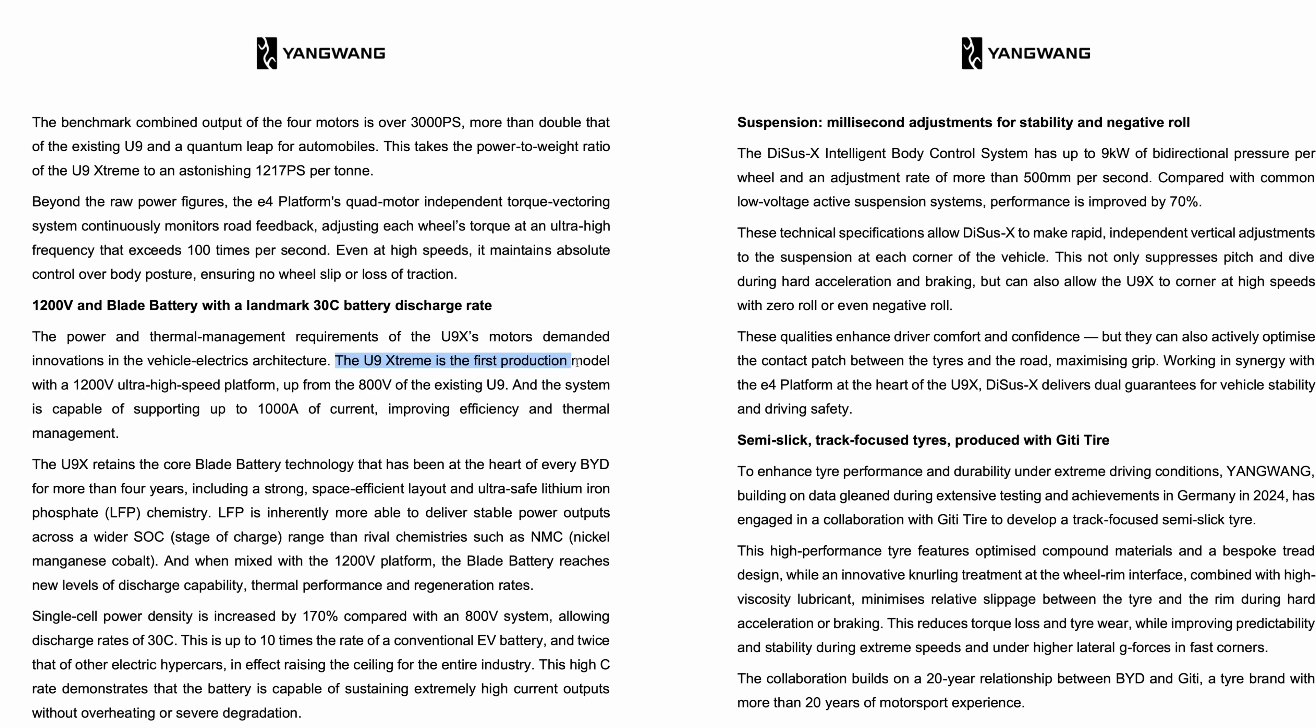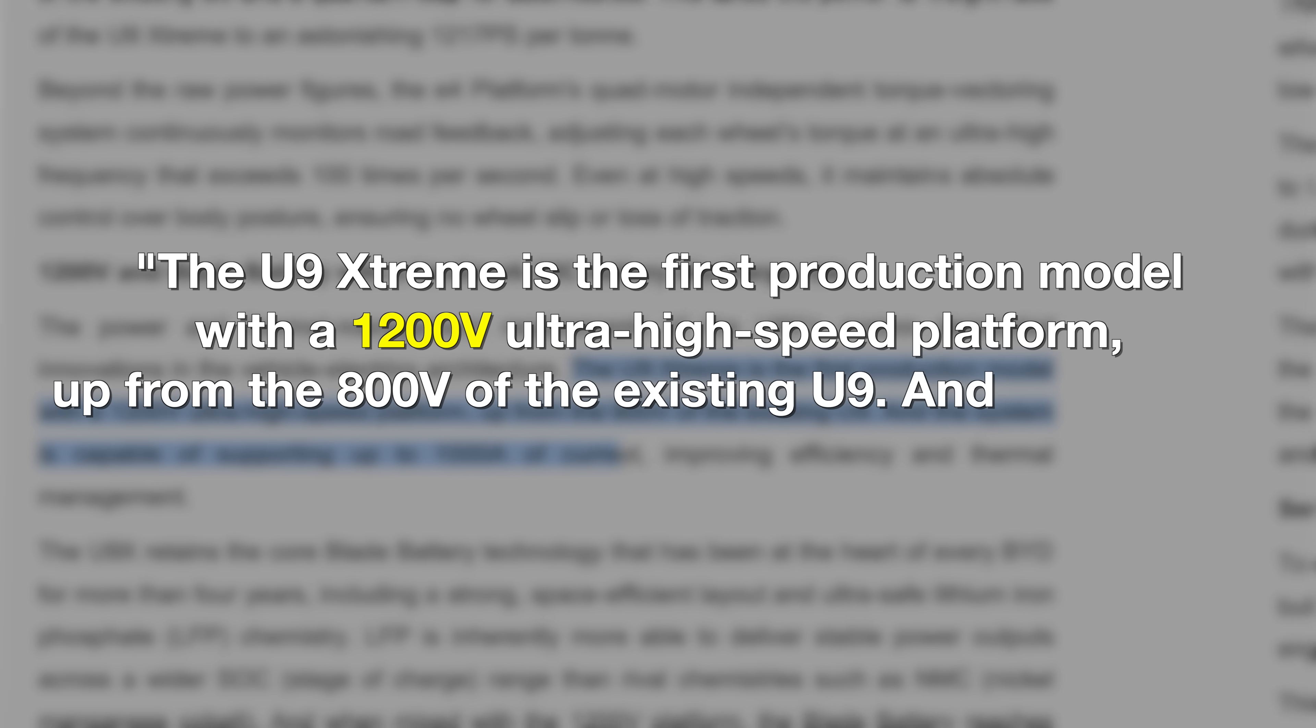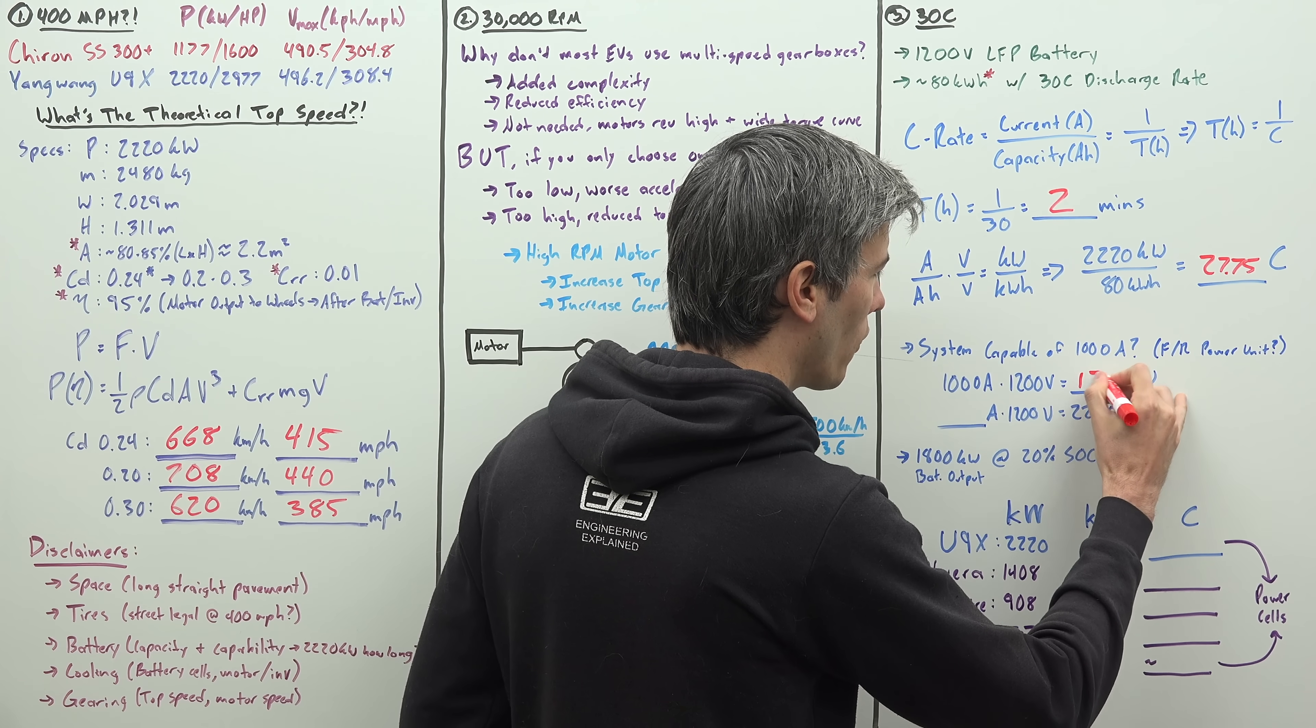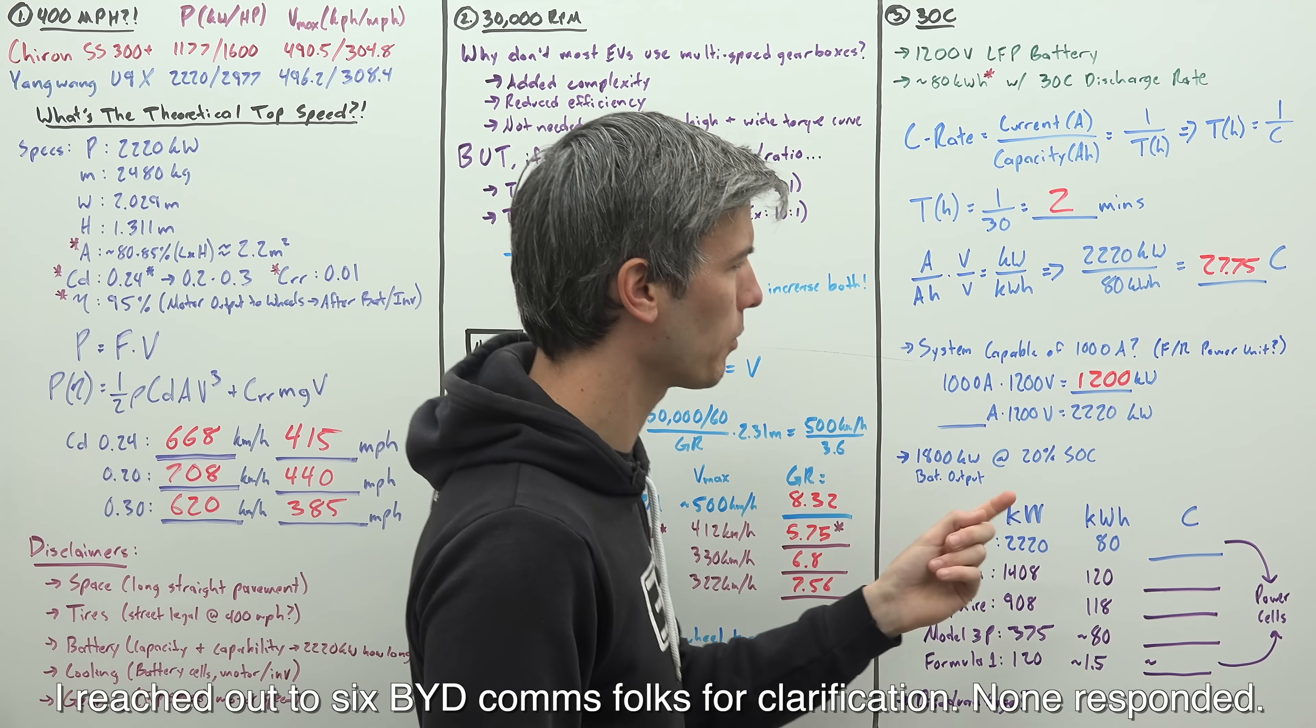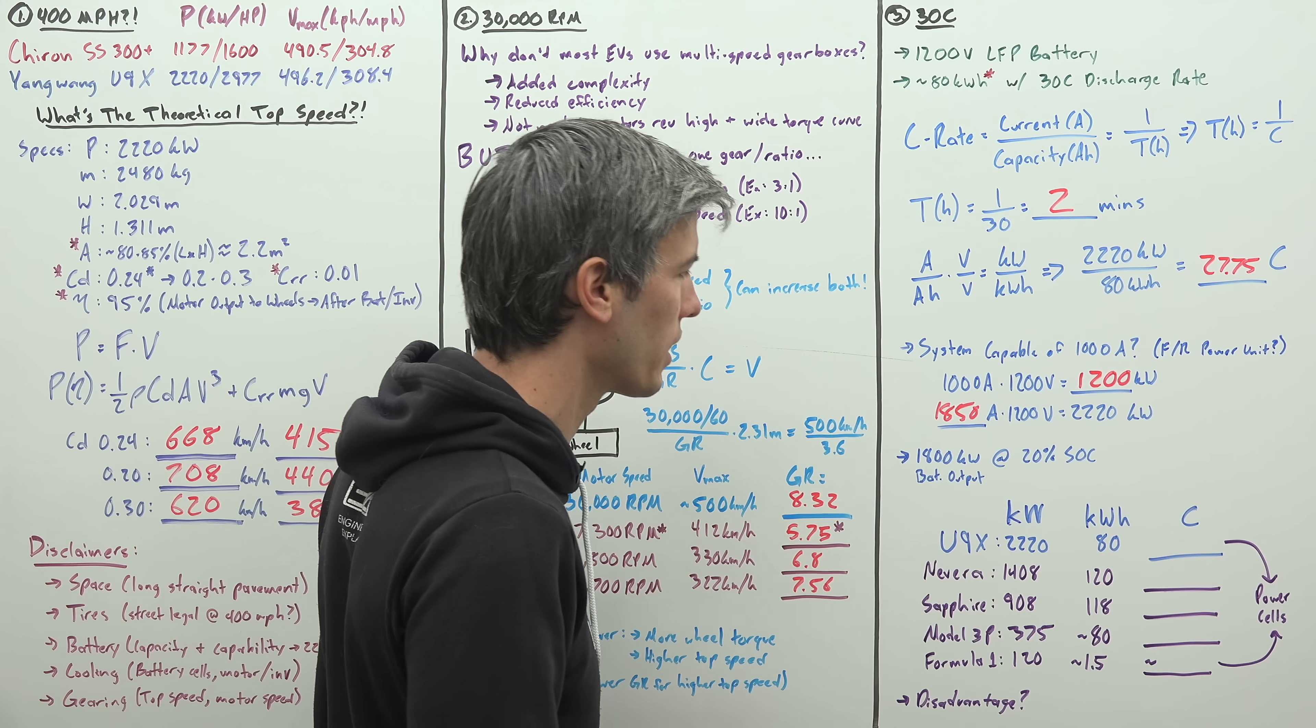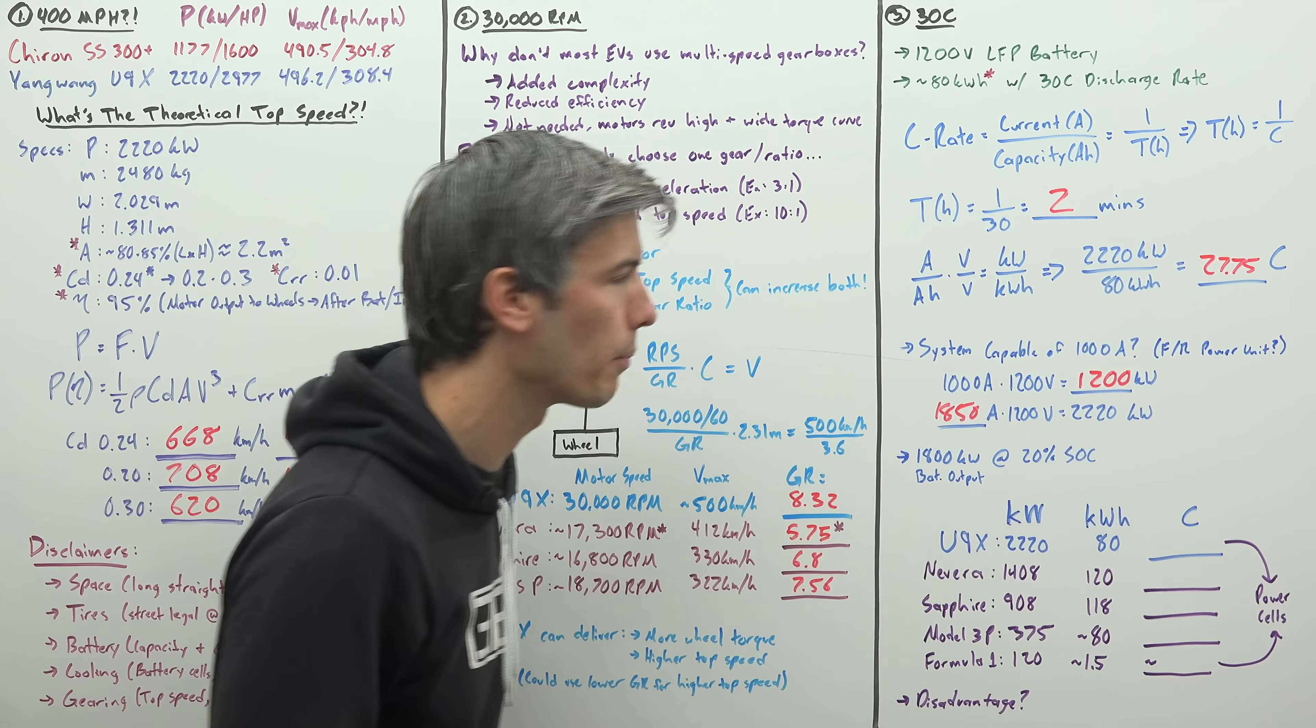Now there's an interesting line in the press release that states the U9 Extreme is the first production model with a 1200 volt ultra high-speed platform, up from the 800 volt of the existing U9. And the system is capable of supporting up to 1,000 amps of current. Alright, but help me out here. 1,000 amps times 1,200 volts, that gives you 1,200 kilowatts. Far less than its output of 2,220 kilowatts. So is this 1,000 amps maybe just for the front and rear power units individually? I don't really know. You would need 1,850 amps multiplied by 1,200 volts to give you that 2,220 kilowatts. Further confused by the fact that they say that the battery can still output 1,800 kilowatts at 20% state of charge. So I'm not sure where this 1,000 amp number is coming from.